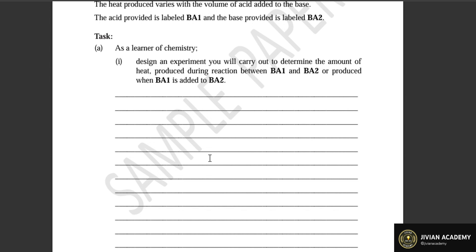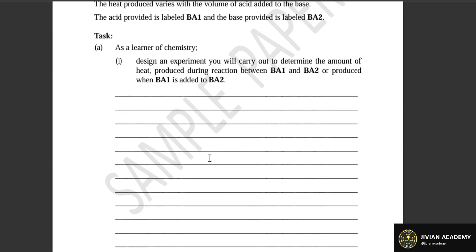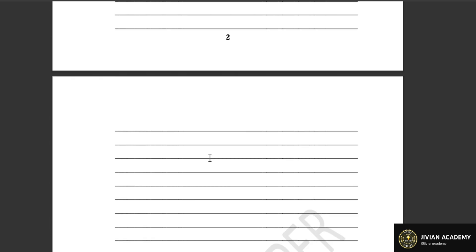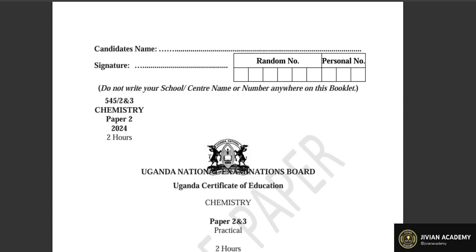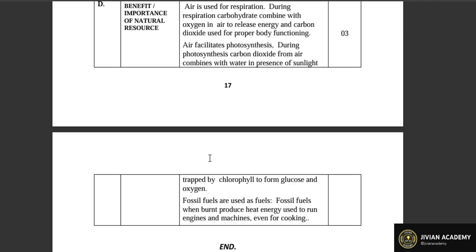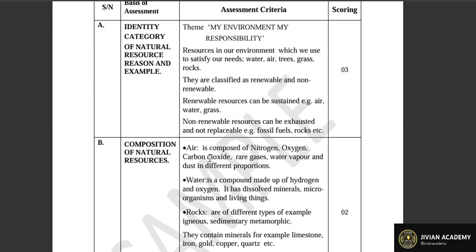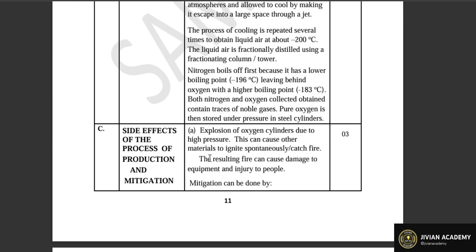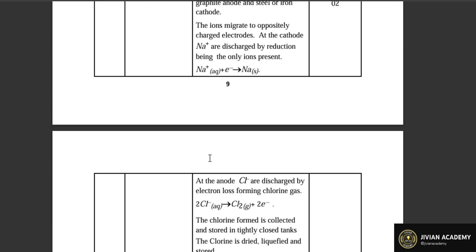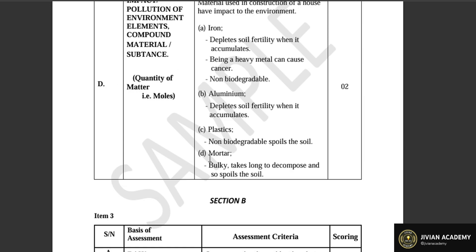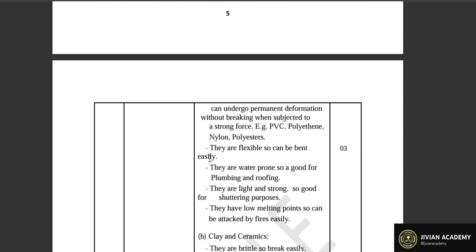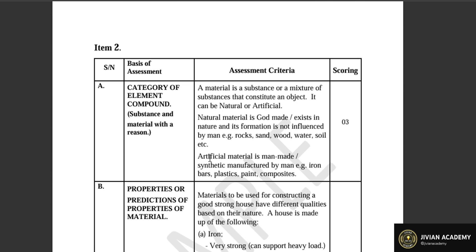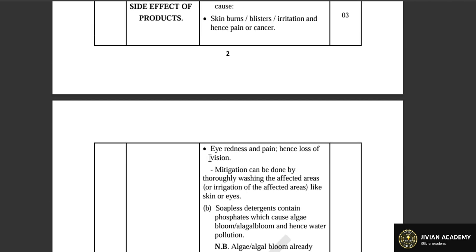Sodium hydroxide reacts with hydrochloric acid according to a given equation. The heat produced varies with the volume of acid added to the base. The acid provided is labeled BA1 and the base provided is labeled BA2. The task for the learner is to design an experiment to determine the amount of heat produced during the reaction between BA1 and BA2.